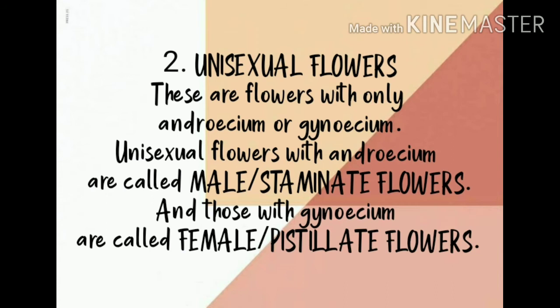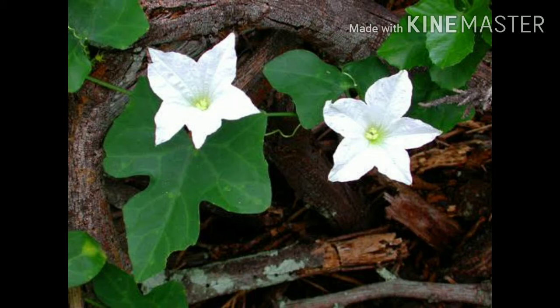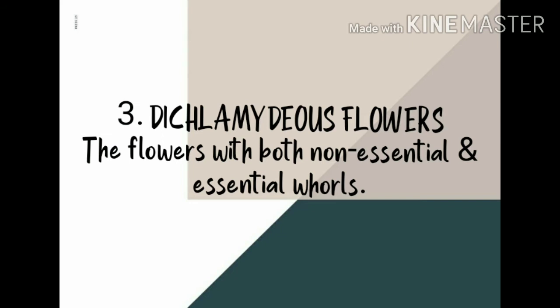Unisexual flowers contain only one of the reproductive organs — either only the androecium or only the gynoecium. If a flower has only the androecium, the male reproductive organ, it is called a male flower or staminate flower. If a flower has only the gynoecium, the female reproductive part, it is termed a female flower or pistillate flower. An example is shown here — this is a picture of Cephalandra.